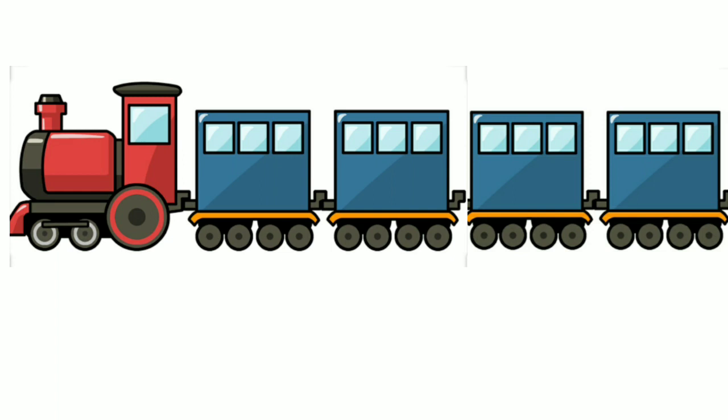Let's count how many boxes are here: 1, 2, 3, 4 — all together 4 boxes. Now have a look at the numbers: 5, after 5 a number is missing, then 7 and 8. Can you guess the missing number?